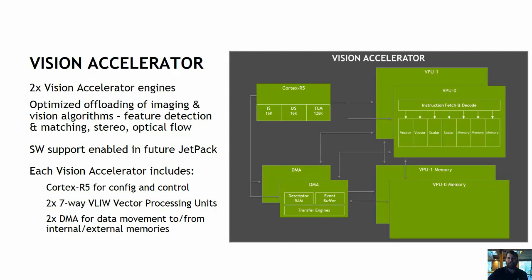Xavier also features two new vision accelerator engines for energy-efficient offloading of computer vision algorithms like feature detection and matching, optical flow, stereo disparity block matching, point cloud processing, and traditional imaging filters like convolution kernels, histogramming, and morphological operators. Each vision accelerator consists of two 7-way very long instruction word vector processing units, an ARM Cortex-R5 core for command and control, and two DMA engines. Each 7-slot vector processing unit is capable of executing two vector, two scalar, and three memory operations simultaneously. Support for the vision accelerator engines will be enabled in a future release of JetPack.